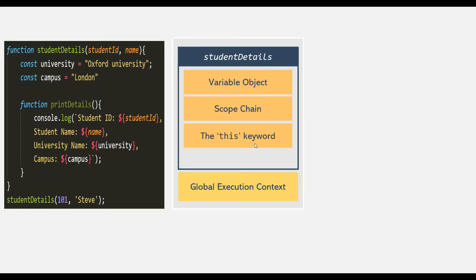We learned how the variable object is created by the JavaScript engine. Now, some developers also like to call this variable object as variable environment. Both variable object and variable environment are the same thing. Don't get confused if you see this term variable environment in some online article or when you hear it in other tutorials — they are the same thing.